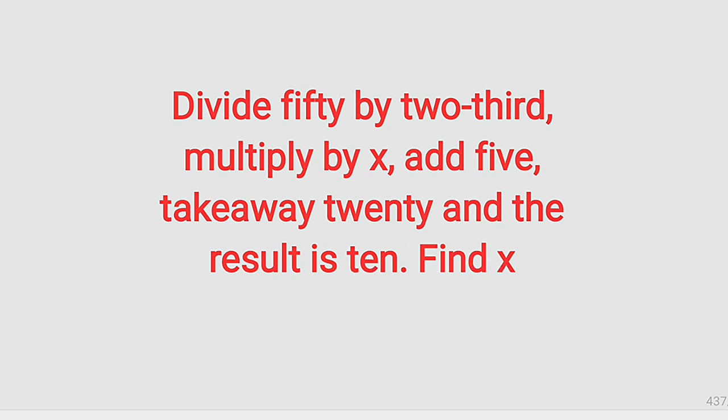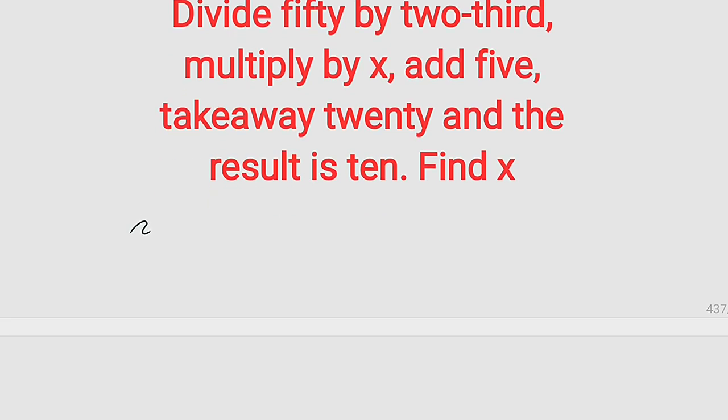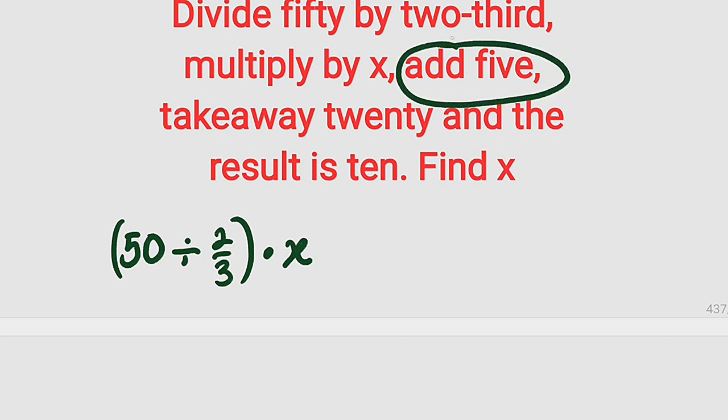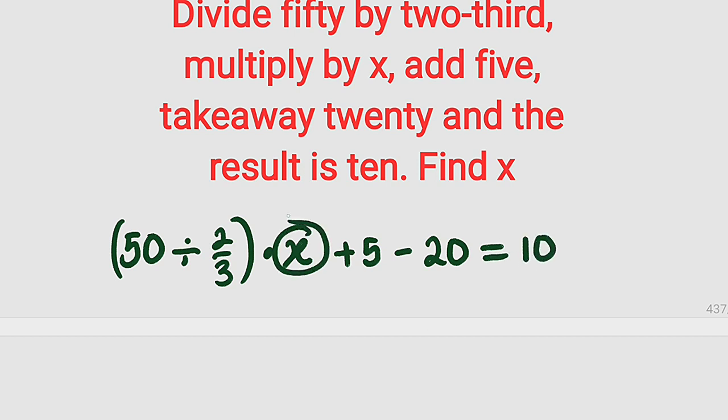Let us interpret it mathematically. It stated that we should take 50 and divide it by two-third. Then we should multiply it by x, then we add 5, then we take away 20, and the result is equal to 10. What is the value of x?